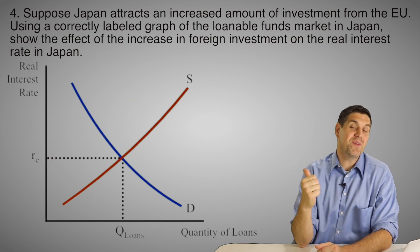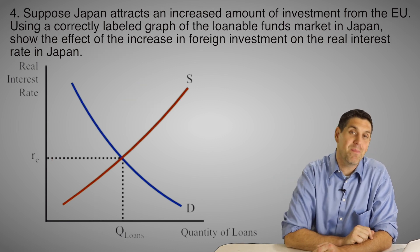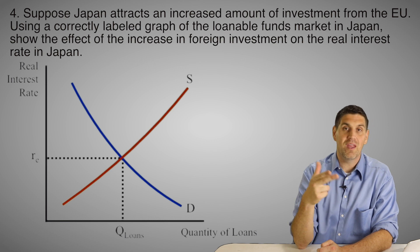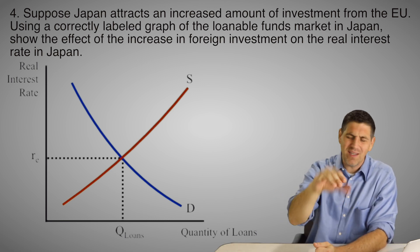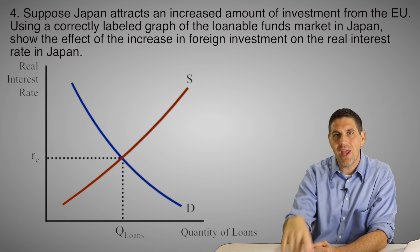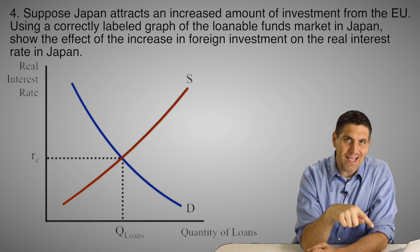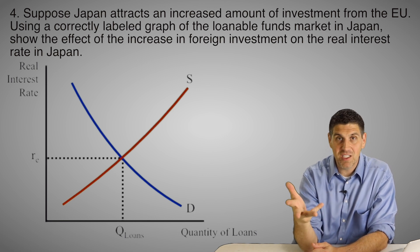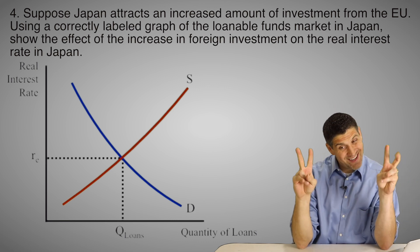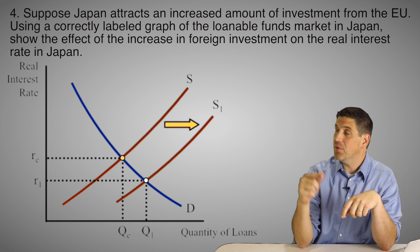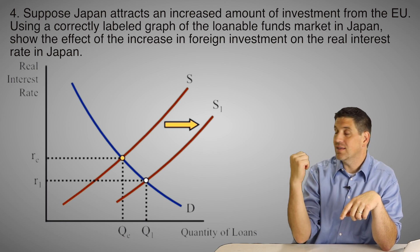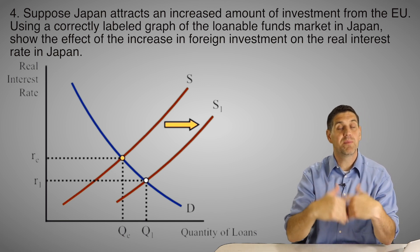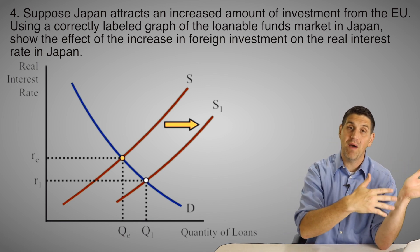Question number four is from the 2011 free response on the AP macro exam. It says Japan attracts an increased amount of investment from the European Union. Investment up to this point has always meant borrowing — the I in C+I+G+XN. But in this case they're talking about foreign investment, which is lending, not borrowing — not business spending inside your own country. So an increase in foreign investment would increase the supply of loanable funds in Japan, decrease the real interest rate, and increase the quantity of loans. There are more loanable funds available to be supplied because all this foreign money is coming in. Supply of loanable funds depends on individuals inside your country willing to save or lend, and individuals from other countries who want to lend money in your country.